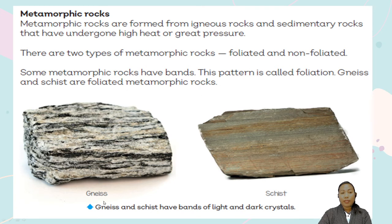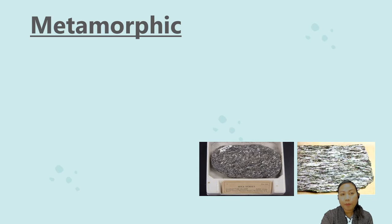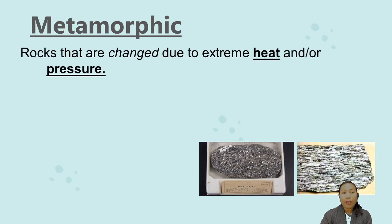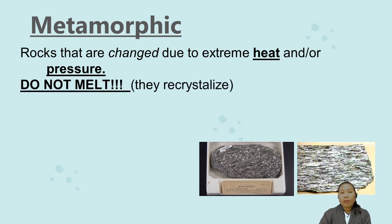Gneiss and schist have bands of light and dark crystals. These are examples of metamorphic rocks. Metamorphic rocks are changed due to extreme heat or pressure — heat meaning the hotness of the temperature of the environment, and also pressure. Metamorphic rocks do not melt; they just recrystallize, forming new crystals.